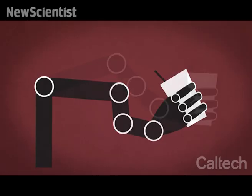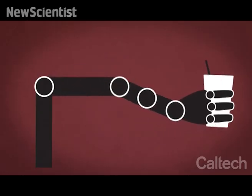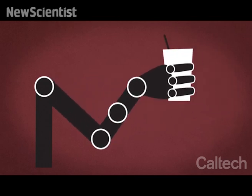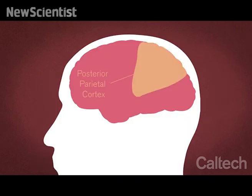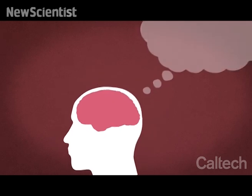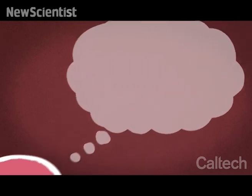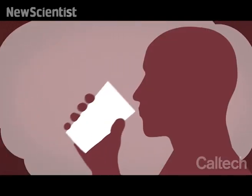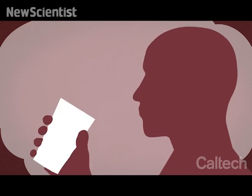At Caltech, researchers wanted the robotic arm to produce more fluid gestures. So they turned their attention to the posterior parietal cortex, or PPC, the region of the brain involved in movement planning rather than movement execution—what you intend to do rather than all the steps it takes for you to do it.